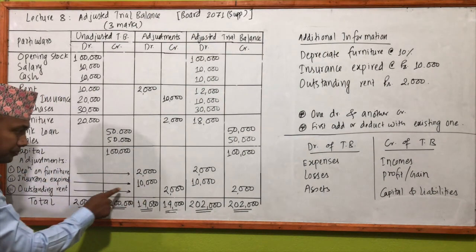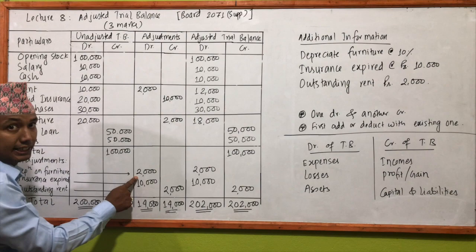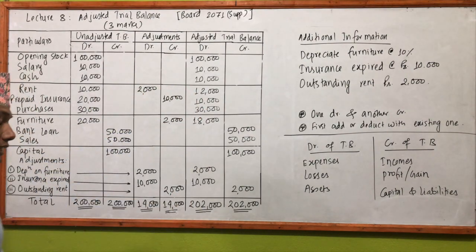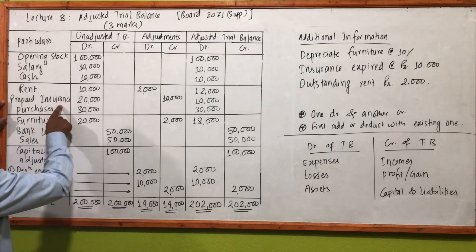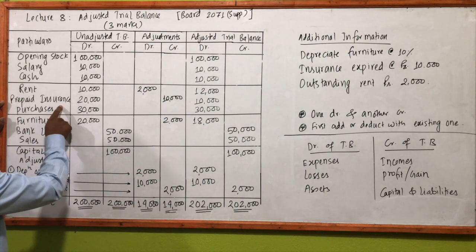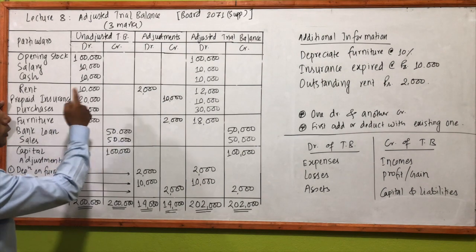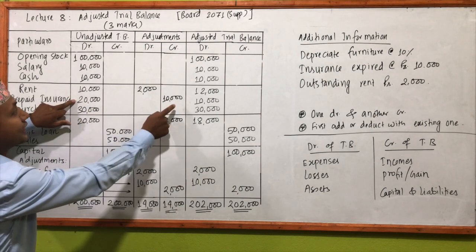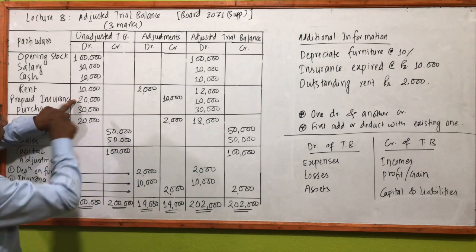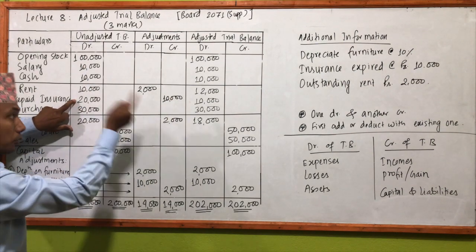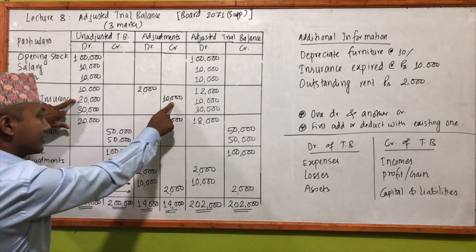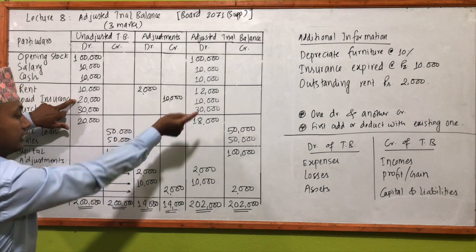We proceed with the depreciation entry. Then the insurance has expired — prepaid insurance. The insurance has a credit side. If you go to credit, it will be put in credit; if you go to debit, it will be put in debit. So debit and credit entries are made accordingly.